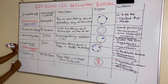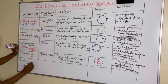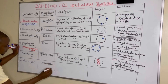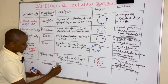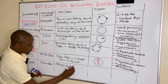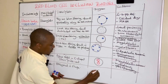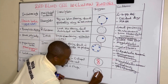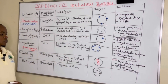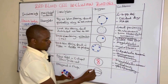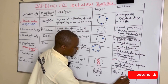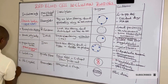Another inclusion body is hemoglobin C crystals. The precipitated material is hemoglobin, and these crystals are hexagonal in shape — we find hexagonal structures within the cell. Hemoglobin C crystals are seen in hemoglobin C disease.